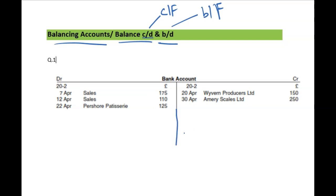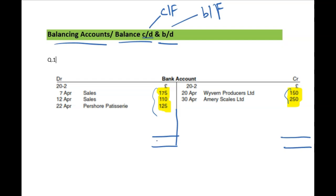How do you do balancing? The rule for balance CD is you've got to get the total of both sides — basically the column first — and you need to check which side is bigger. The added up of these three and the added up of these two. If you add these three, you get 410, and these two make 400. So 410 is the bigger figure, which you write as the total on both sides.